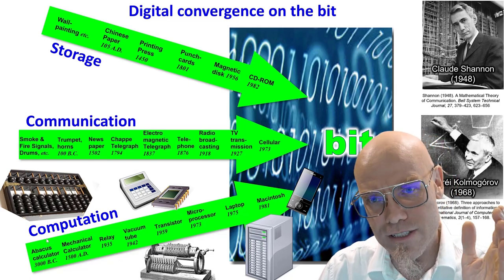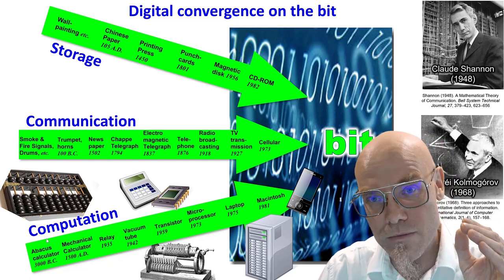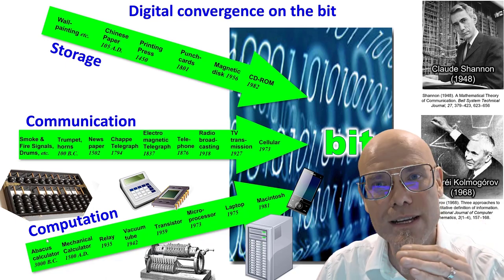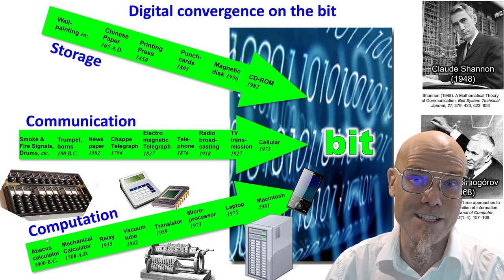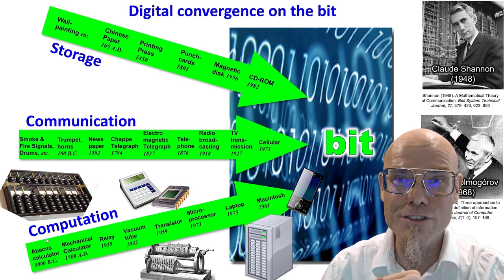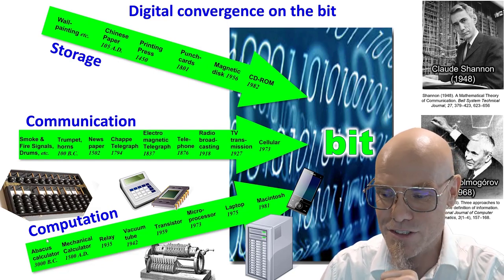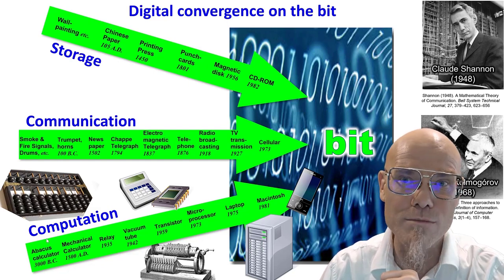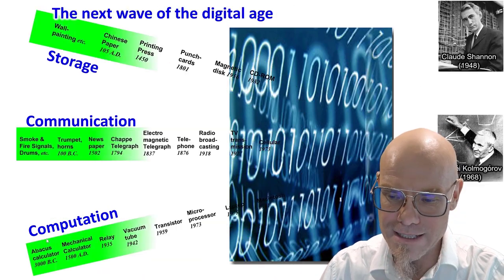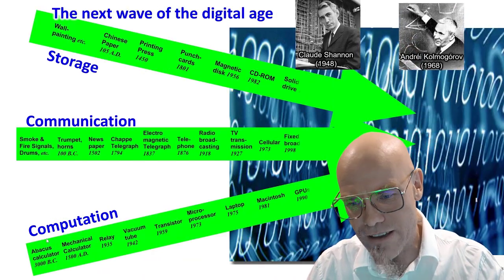The theoretical conceptualization of how the bit is used in computation comes from another mathematician. During the Cold War they didn't really talk to each other — it's a Russian mathematician called Andrei Kolmogorov, known for Kolmogorov complexity. And of course this continues and evolves from there.